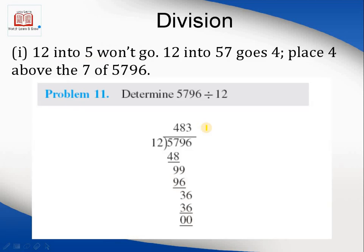Another question: determine 5796 divided by 12. Same process, but a little more complex because the divisor is larger. Unlike multiplication where digits are handled separately, here you must treat the divisor 12 as a single unit — a single number. If the divisor is double-digit, it is taken as a single unit, so it is treated as 12.